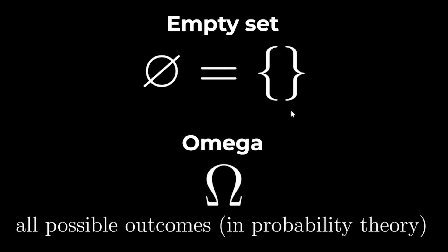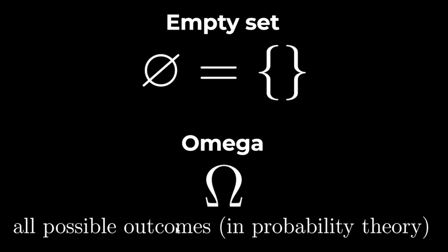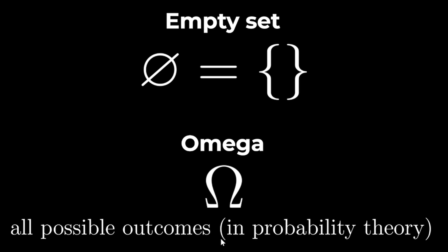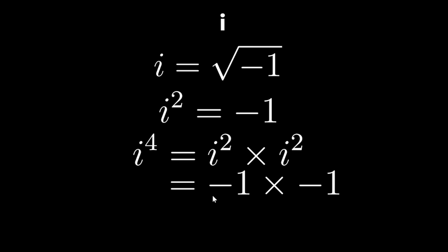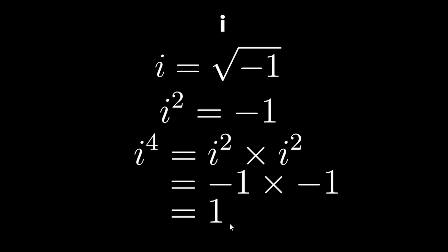The empty set is represented by the Danish O slash symbol and omega is used in probability theory to represent the set of all possible outcomes. i is equal to the square root of minus 1 so i squared is minus 1 and i to the 4 is minus 1 times minus 1 which is just 1.